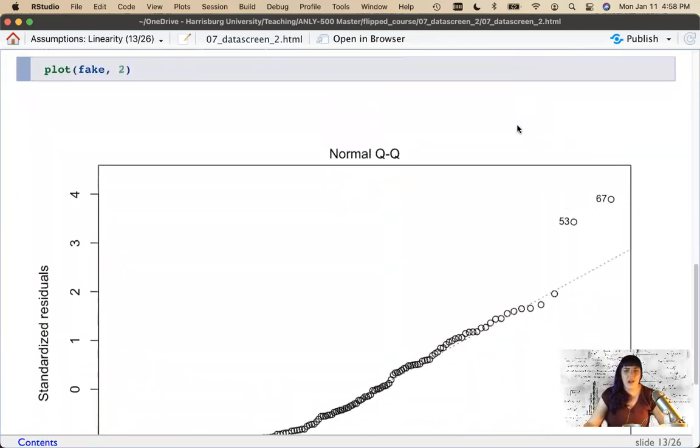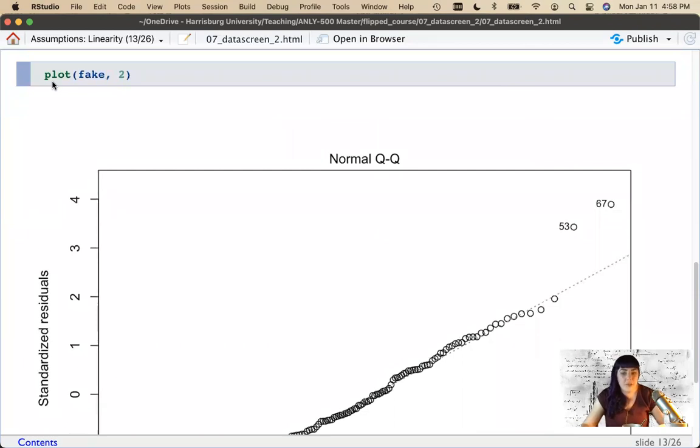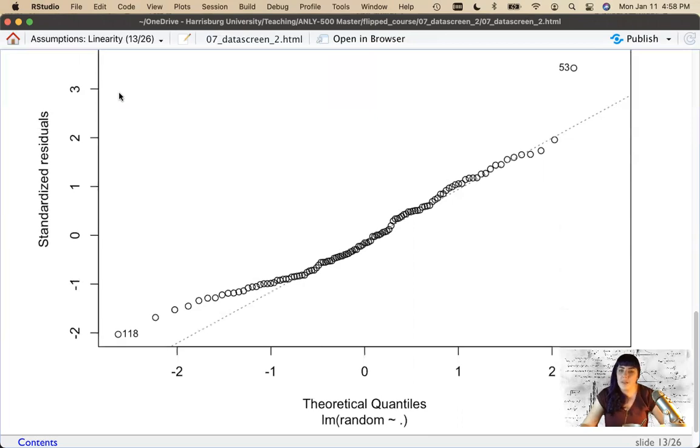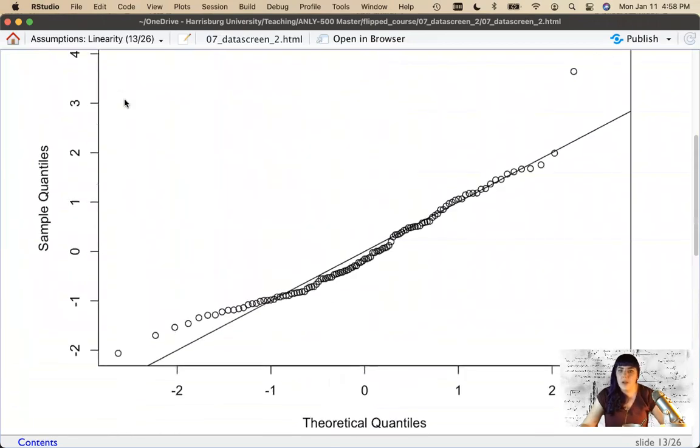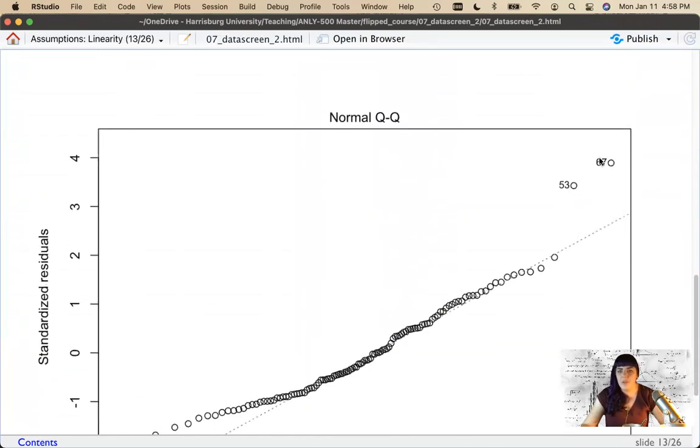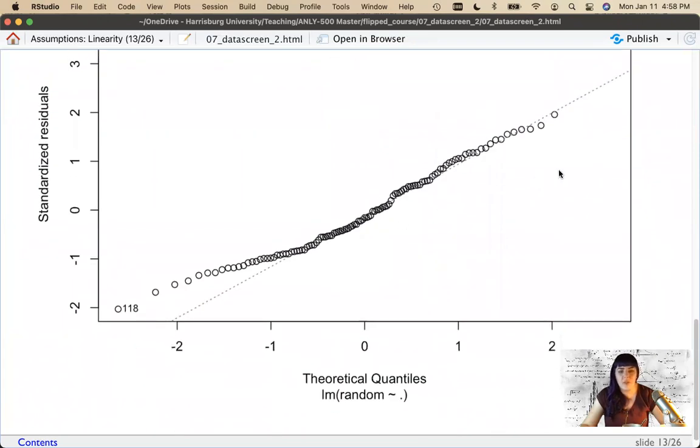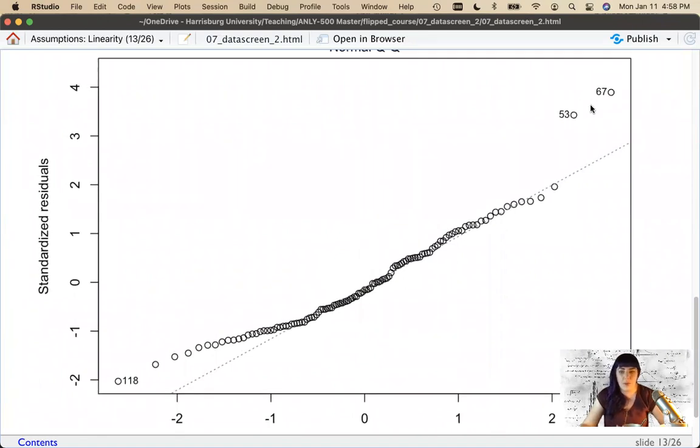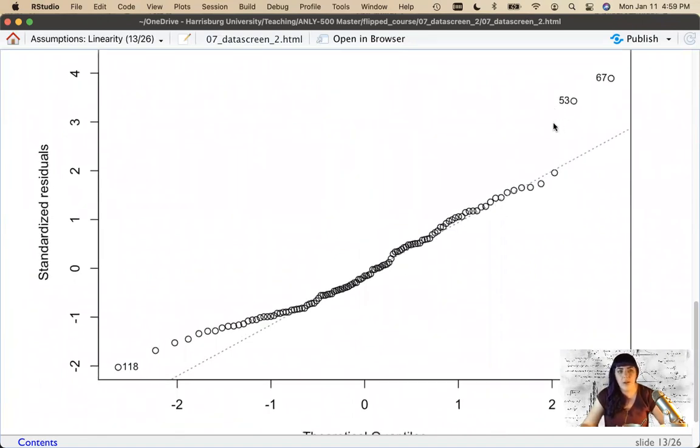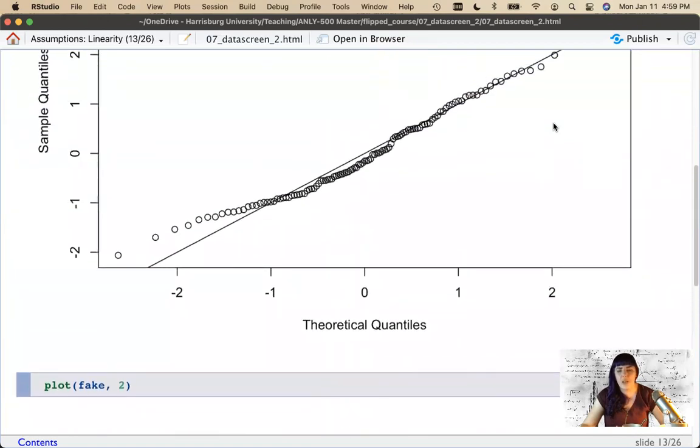Now, the other way to get this exact graph actually is to use the plot function that's built into the linear model. You put in the name of our saved fake analysis and you tell it plot, give me plot number two and it'll give me the exact same plot. And then it just happens to label who these two people are. Now we've already looked for outliers. And so I don't tend to use this one, even though it tells me who these plots are because I've already checked to make sure they weren't outliers, but either way is the way you can get this linearity plot.